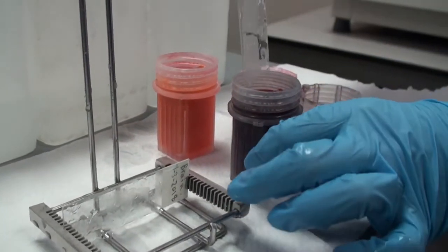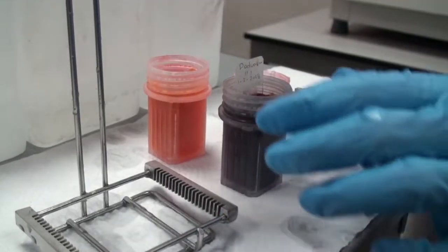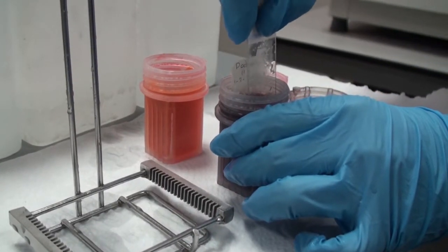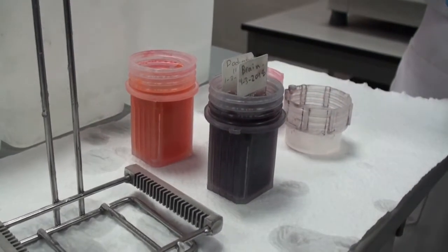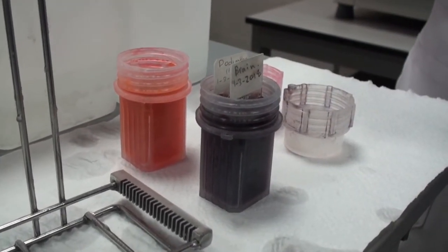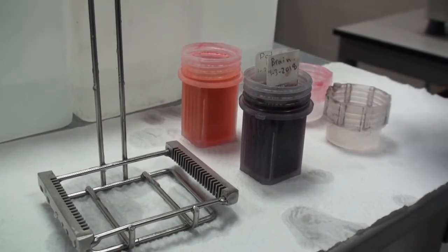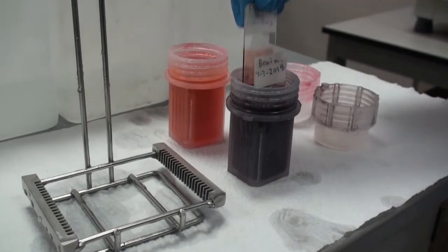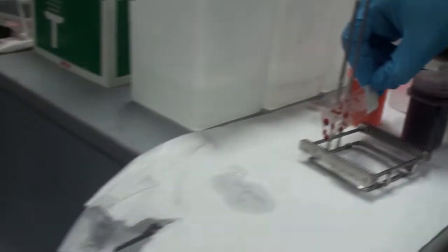First, we will put the sample in hematoxylin, which you know is blue. And we will leave it for five minutes inside the hematoxylin. The hematoxylin is a nuclear stain, remember, because it adheres to negatively charged molecules. Then we will remove it from the hematoxylin after five minutes. Wash it under the running tap water.